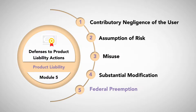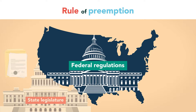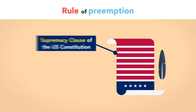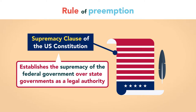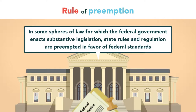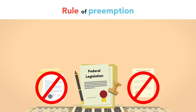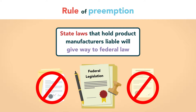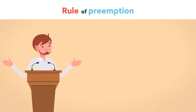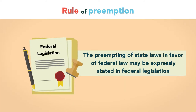Federal Preemption: under the rule of preemption, the legal standards and regulatory schemes enacted in a state legislature are displaced in favor of federal regulations for a specific area of law. The preemptive doctrine is rooted in the supremacy clause of the U.S. Constitution, which establishes the supremacy of the federal government over state governments as a legal authority. This means that in some spheres of law for which the federal government enacts substantive legislation, state rules and regulations are preempted in favor of federal standards. When federal preemption is applicable, state laws that hold product manufacturers liable will give way to federal law. This opens the way for a defendant in a product's liability case to assert that state laws, which may be more demanding on manufacturers, are inapplicable due to federal preemption.